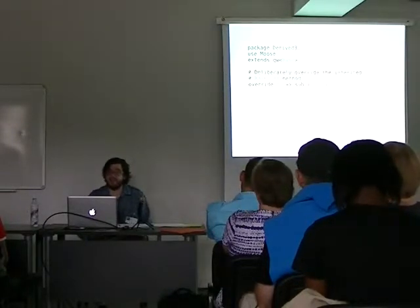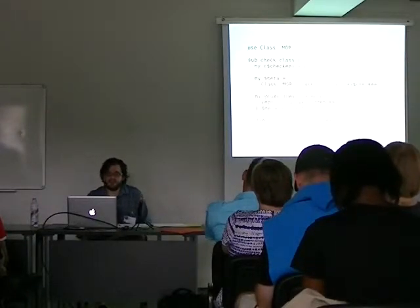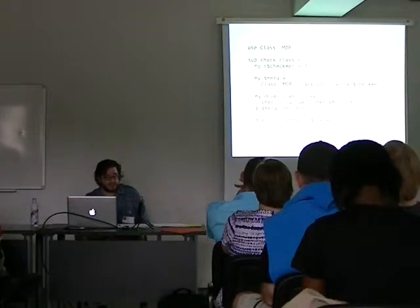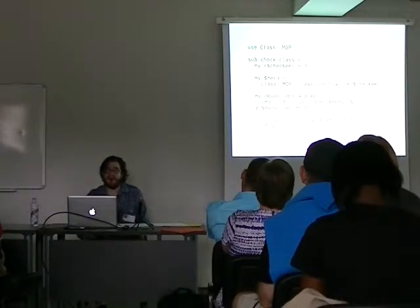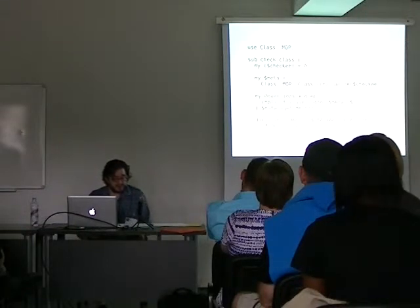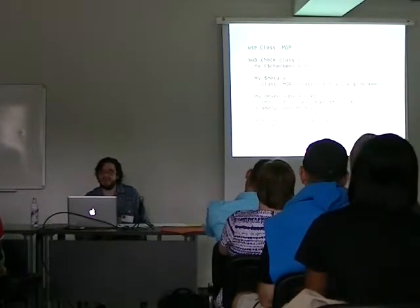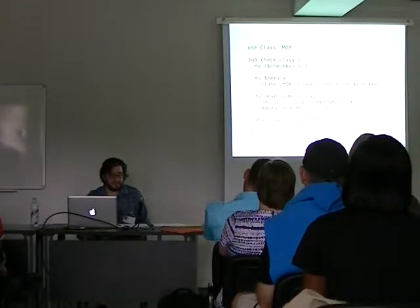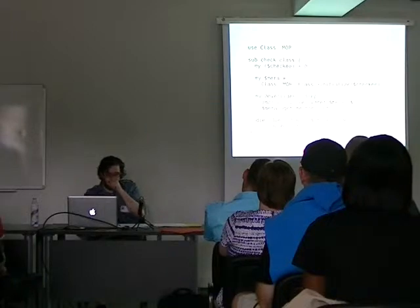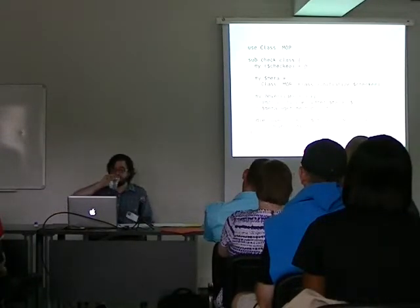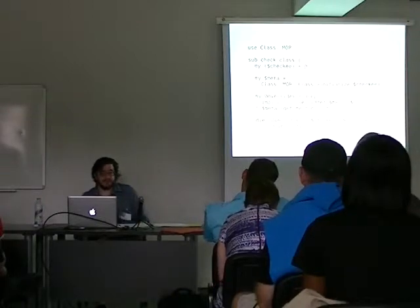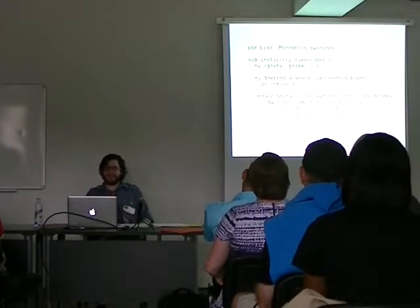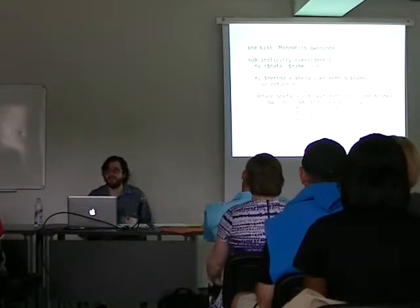So how do we write the code that determines whether a method has been implicitly overridden? Let's start with a function named check_class. It takes a class name as an argument and throws an exception if that class overrides any method in its inheritance graph other than using an explicit method modifier. So check_class finds all the methods directly in the class, and for each one sees whether it's been implicitly overridden. If there are any that have been implicitly overridden, it throws an exception. The heavy lifting is done by the function implicitly_overridden in the middle of the grep there.